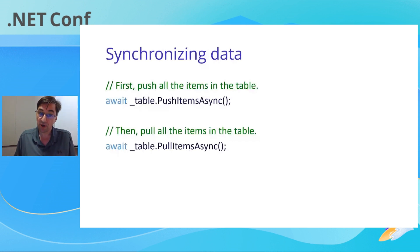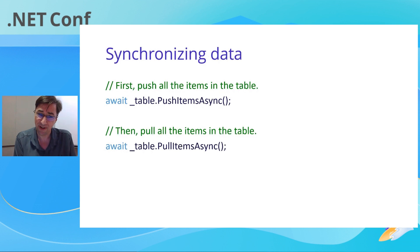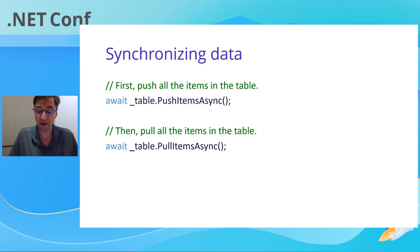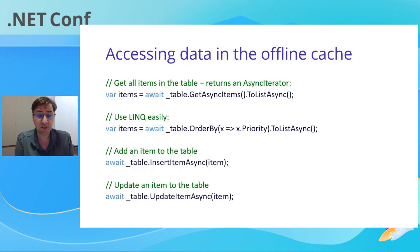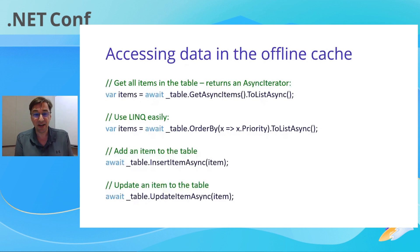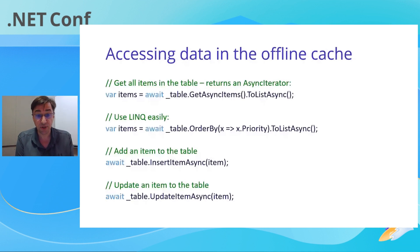You can run this as many times as you want — it will just pull the changes that have been made and not the entire table. So if you've got, for example, 50,000 records and only five of them have been changed, you're only going to pull down those five records. And then you can use the offline cache pretty much like you would use any other repository. You can get all of the items in the table using an async iterator, use LINQ with 'where,' 'select,' 'order by,' and so on, and use 'ToListAsync' and other async operations to convert them into arrays or lists.